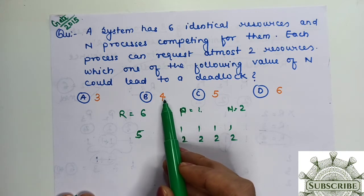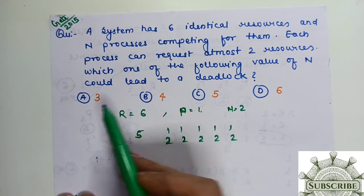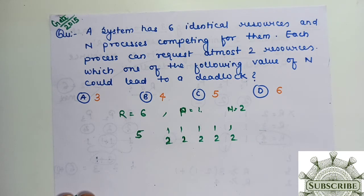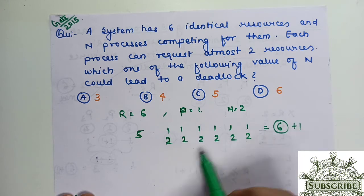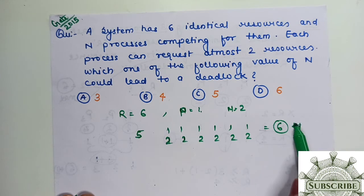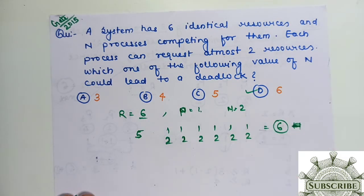At most 5 processes we can run, 4 we can run, 3 we can run. But 6 we cannot run. Why? As soon as 6 processes come, I need minimum 6 instances, but I need one more to avoid the deadlock. But this is not available. We have 6 processes and 6 identical resources. The resource is exactly the same amount. So this will cause deadlock.